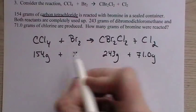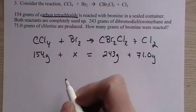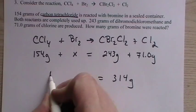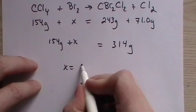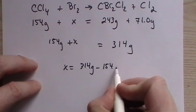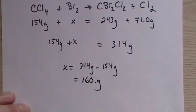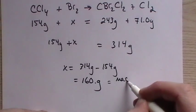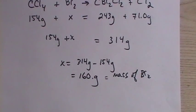Alright. So, again, we know from the Law of Conservation of Mass that the mass of the reactants must equal the mass of products. So, get this right. So, we have 4, so that would be 314 grams. 154 grams plus X. And then, X is equal to 314 minus 154. And I think I can do that in my head. I think that's 160, but I'll double-check. And so, the mass of the bromine, the mass of bromine that was used to react with your 154 grams of carbon tetrachloride.